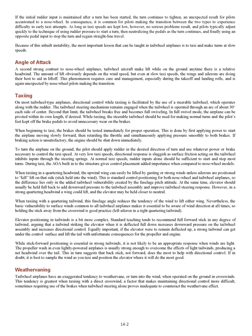Taxiing: on most tailwheel-type airplanes, directional control while taxiing is facilitated by the use of a steerable tailwheel, which operates along with the rudder. The tailwheel steering mechanism remains engaged when the tailwheel is operated through an arc of about 30 degrees each side of center. Beyond that limit, the tailwheel breaks free and becomes full swiveling. In full swivel mode, the airplane can be pivoted within its own length if desired. While taxiing, the steerable tailwheel should be used for making normal turns and the pilot's feet kept off the brake pedals to avoid unnecessary wear on the brakes.